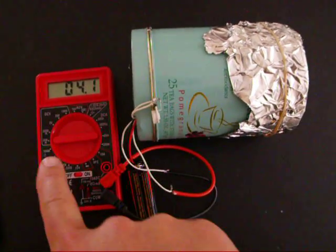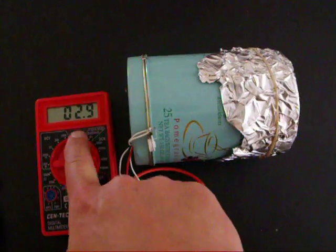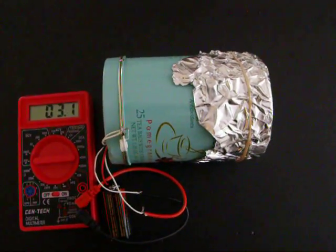The multimeter here is set on the 200 millivolt range, and you see the readings are fluctuating because there is background ionization radiation.